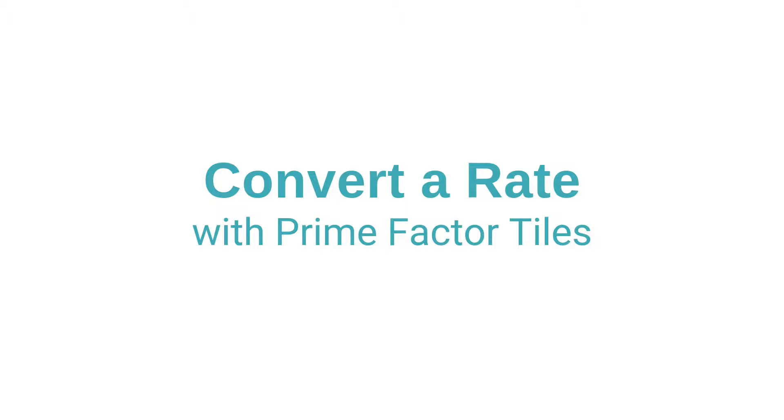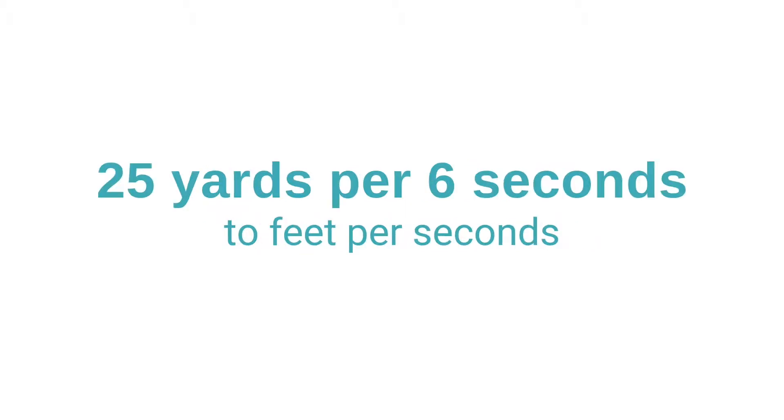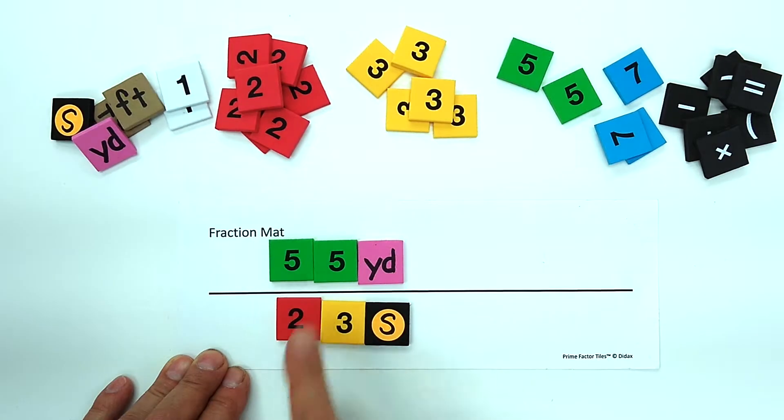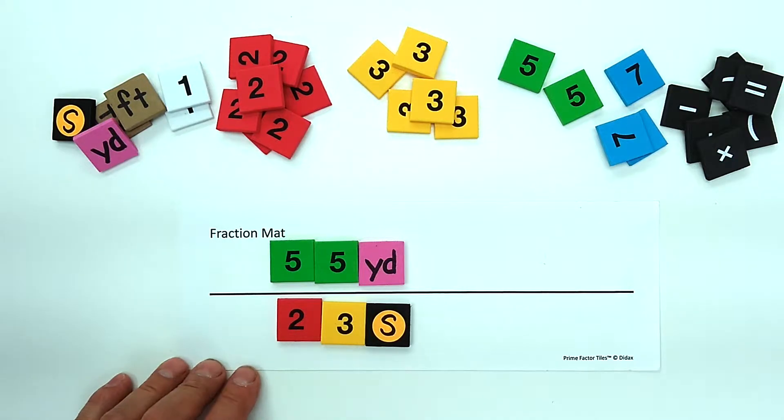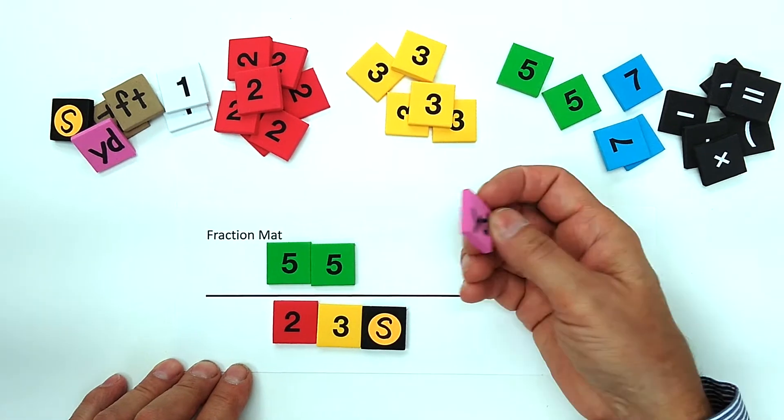Convert a rate with prime factor tiles: convert 25 yards per 6 seconds to feet per second. 5 times 5 for 25, 2 times 3 for 6. For the units yards and seconds, I've got a tile here made from craft foam, and I've got a sticker on the reverse of my prime factor tiles.